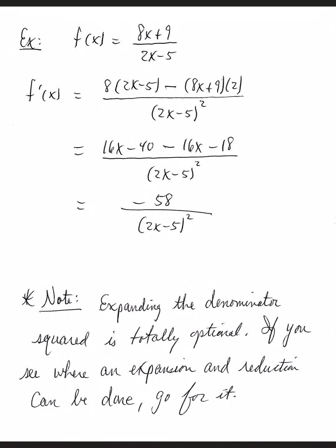The second example, we have a function defined as 8x plus 9 over 2x minus 5. So we'll take the derivative of the top, which is 8 times the bottom left alone, minus the numerator or the top left alone, times the derivative of the bottom, all over the denominator squared.